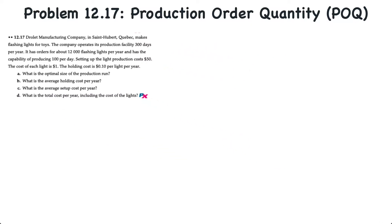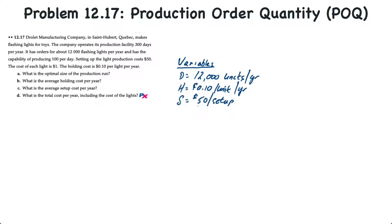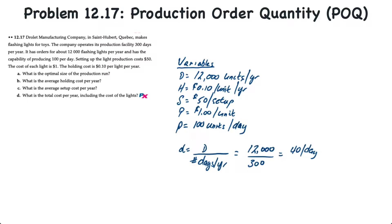Before proceeding, it helps to list all the variables involved in the problem. Annual demand D is 12,000 units per year. Holding cost H is $0.10 per unit per year. Setup cost S is $50 per setup. Product cost P is $1 per unit. Daily production rate p is 100 units per day. Because POQ also requires us to know the daily demand, we calculate that here too: daily demand d equals annual demand D divided by the number of working days per year, which is 12,000 divided by 300, giving a daily demand of 40 units per day.